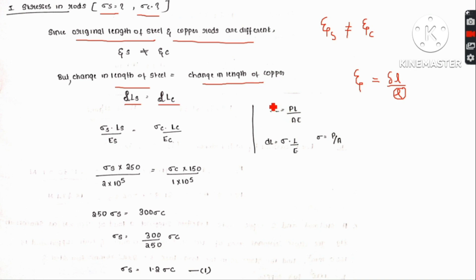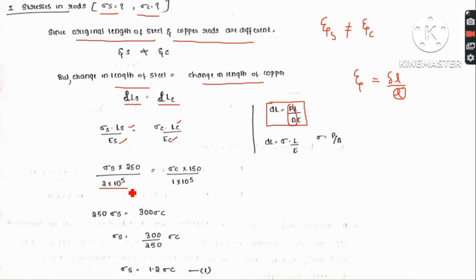Using delta L equals sigma times L divided by E: delta L_s equals sigma_s times L_s divided by E_s, and delta L_c equals sigma_c times L_c divided by E_c. Substituting the values — L_s equals 250 mm, L_c equals 150 mm, E_s and E_c — and simplifying gives sigma_s equal to 1.2 times sigma_c. This is equation 1 from the compatibility condition.